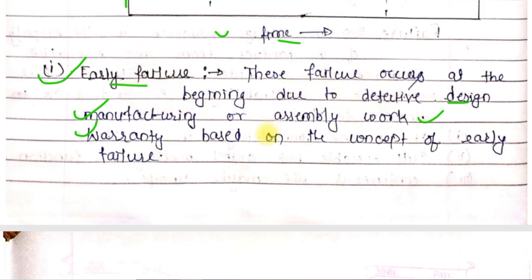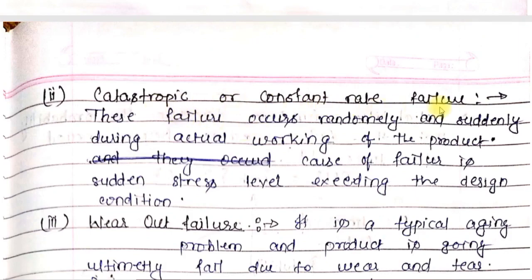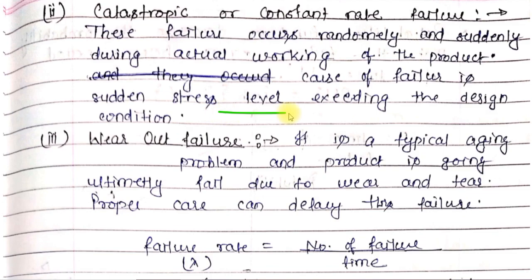Catastrophic or constant rate failure: This failure occurs randomly and suddenly during actual working of the product. We can't predict anything about this failure. After your warranty period crosses, the period after that is the catastrophic constant rate period. We don't know about any failure in this case. Your product will work fine but may suddenly fail due to some unwanted reason. In this case, the failure is completely unpredictable and may happen due to sudden stress level exceeding the design condition.